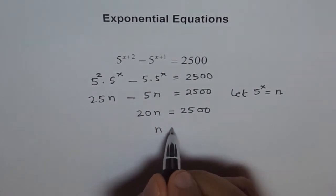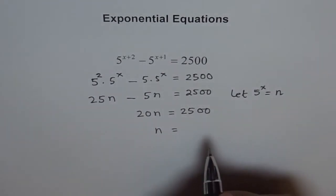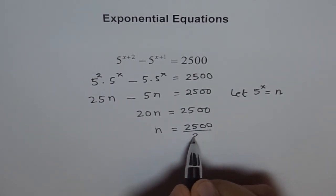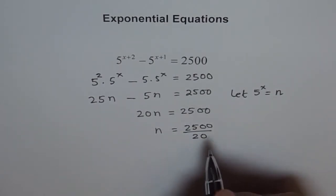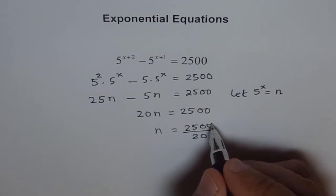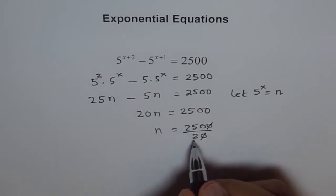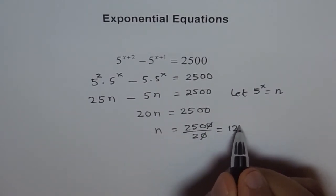And therefore n can be written as 2500 divided by 20. So that means 250 divided by 2, which means 125.